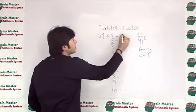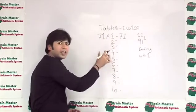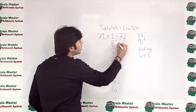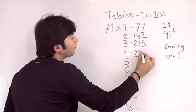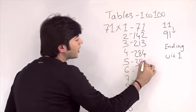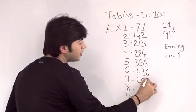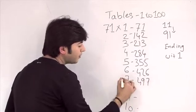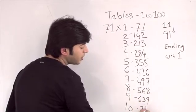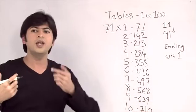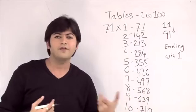For the table of 71: split into 7 and 1. 71×1 gives 7 and 1; 71×2 — 7×2=14, 1×2=2, answer 142; 71×3 — 21 and 3, answer 213; 71×4 — 28 and 4, answer 284; 71×5 — 35 and 5, answer 355; 71×6 — 42 and 6, answer 426; 71×7 — 49 and 7, answer 497; 71×8 — 7×8=56, 1×8=8, answer 568; 71×9 — 63 and 9, answer 639; 71×10 = 710.